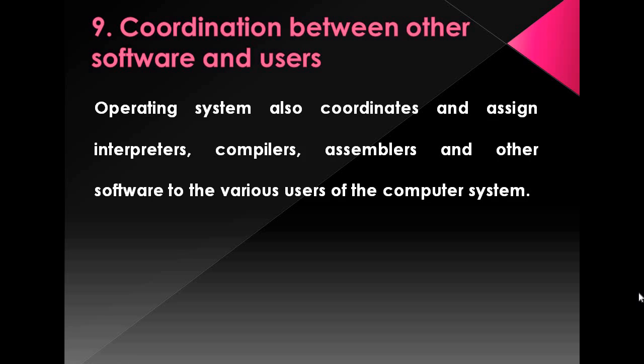The last function of the operating system is coordination between other softwares and users. The operating system coordinates and assigns interpreters, compilers, assemblers, and other software to various users of the computer system. At a time, if one user is using different softwares, the operating system takes care of all the softwares which have been opened and are executing. With this we finish with all the functions of the operating system. Thank you.